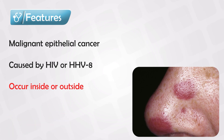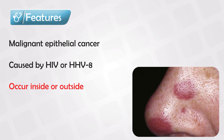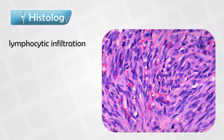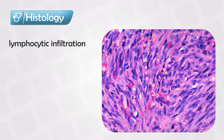The scenario in the exam might also give you somebody with an organ transplant — just think of anyone who is immunocompromised. If we take a sample of these lesions and put it under the microscope, we will see lymphocyte infiltrates, and this is characteristic of Kaposi's Sarcoma.